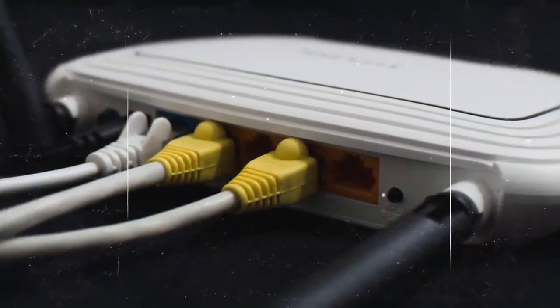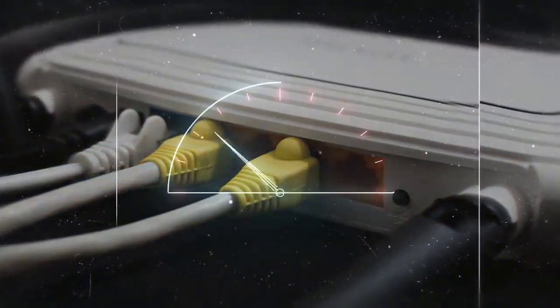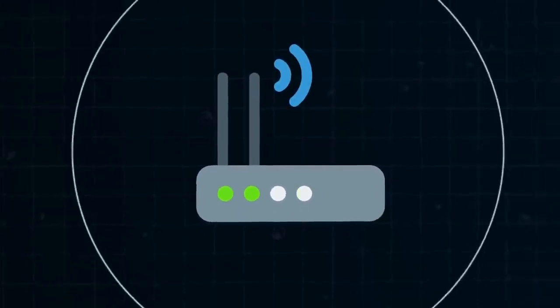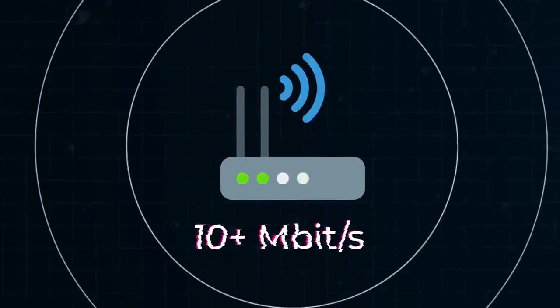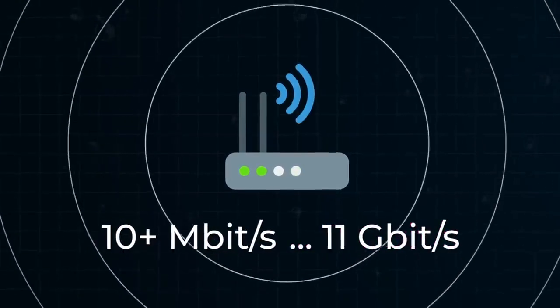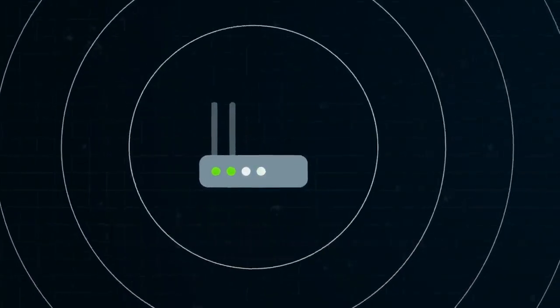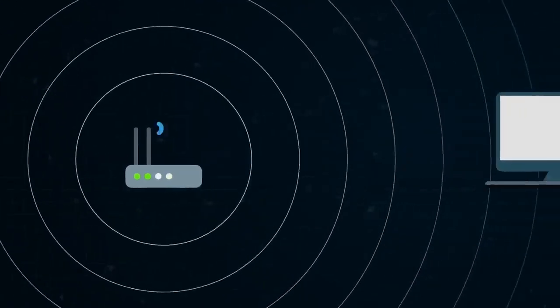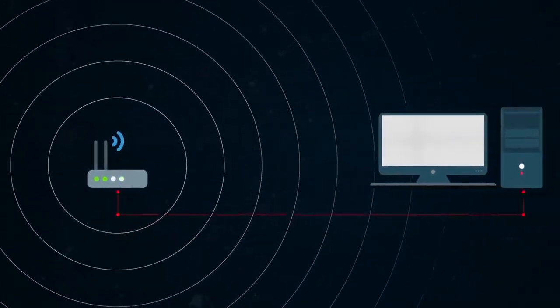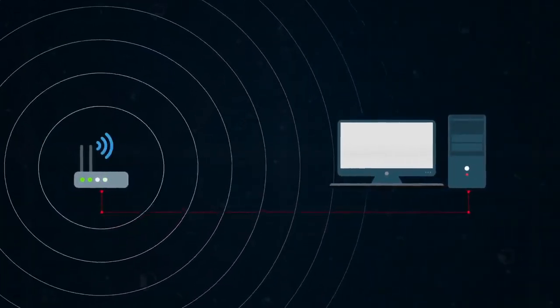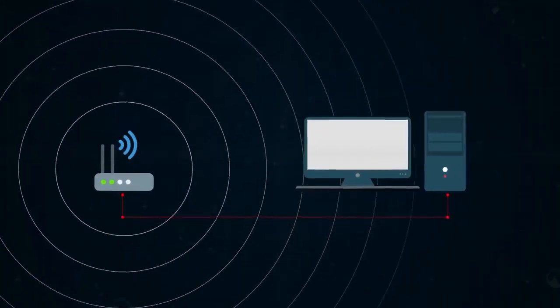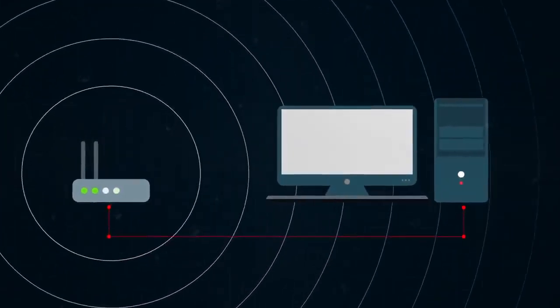But all of this isn't as important as the speed at which information transfers. When using a wireless connection, it can range from several tens of megabits to 11 gigabits per second. In the case of a Wi-Fi connection, this directly depends on your distance from the adapter. The closer you are, the better your signal, which means a higher speed.